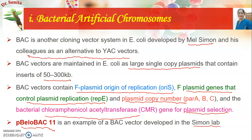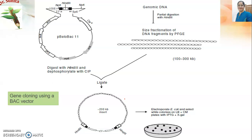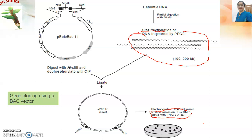How can we use the BAC vector in gene cloning? The vector is digested with HindIII and then dephosphorylated using alkaline phosphatase. Desired genomic DNA fragments in the range of 100 to 300 kilobase pairs are prepared. These are ligated with DNA ligase and then electroporated into E. coli, and transformed cells are selected on plates.